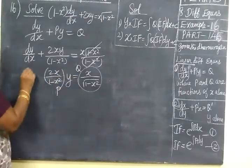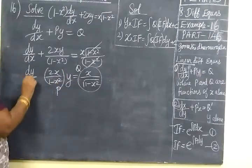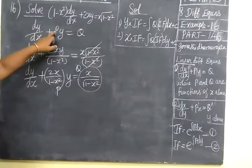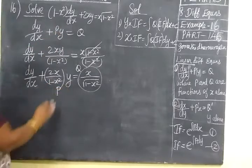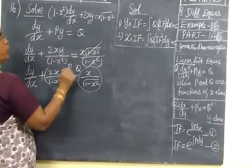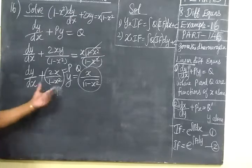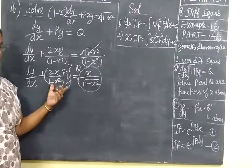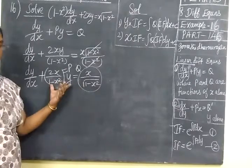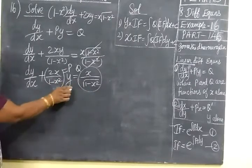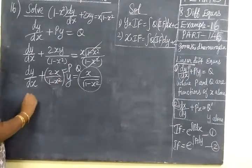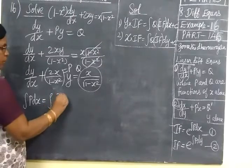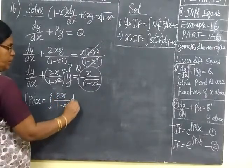This side y. Now write dy/dx plus Py — this is of the standard form dy/dx plus Py equal to Q, where P and Q are functions of x alone. This should be clearly verified, otherwise the problem may be wrong. Now, first find the integral of P dx, which equals the integral of 2x by 1 minus x squared dx.